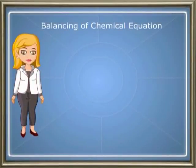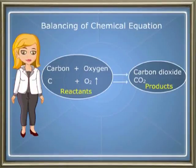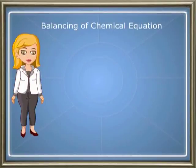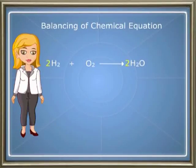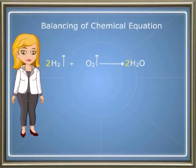To balance a chemical equation, first write the chemical equation in words showing the reactants and products. Then write the chemical equation using symbols and formulae. Note that molecules of elements like hydrogen, nitrogen, oxygen, fluorine, chlorine, bromine, and iodine are diatomic — that is, they consist of two atoms each. To balance an equation, change the coefficients of molecules of the reactants or products; the number of atoms in the molecules or compounds should remain the same. Write an upward arrow beside the formula if the substance is a gas and a downward arrow if it is a precipitate.